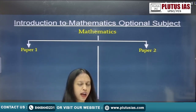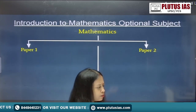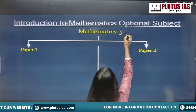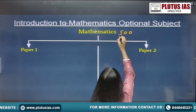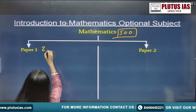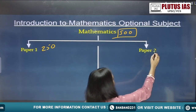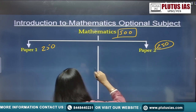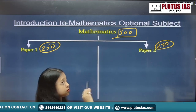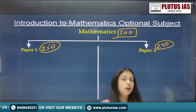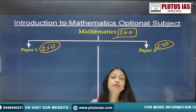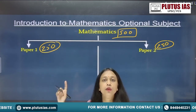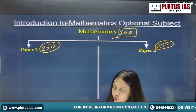Everybody knows we have two papers of mathematics. Every optional subject has Paper 1 and Paper 2, carrying 500 marks total — 250 marks each. The exam is not on two different days; Paper 1 is in the morning shift and Paper 2 in the afternoon shift, so in one single day you have to appear for both papers.